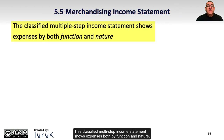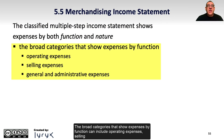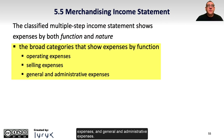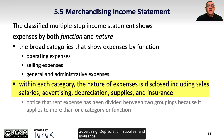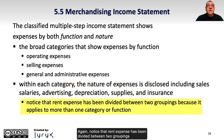This classified multi-step income statement shows expenses both by function and nature. The broad categories showing expenses by function include operating expenses, selling expenses, and general and administrative expenses. Within each category, the nature of expenses is disclosed, including sales salaries, advertising, depreciation, supplies, and insurance. Notice that rent expense has been divided between two groupings because it applies to more than one function.